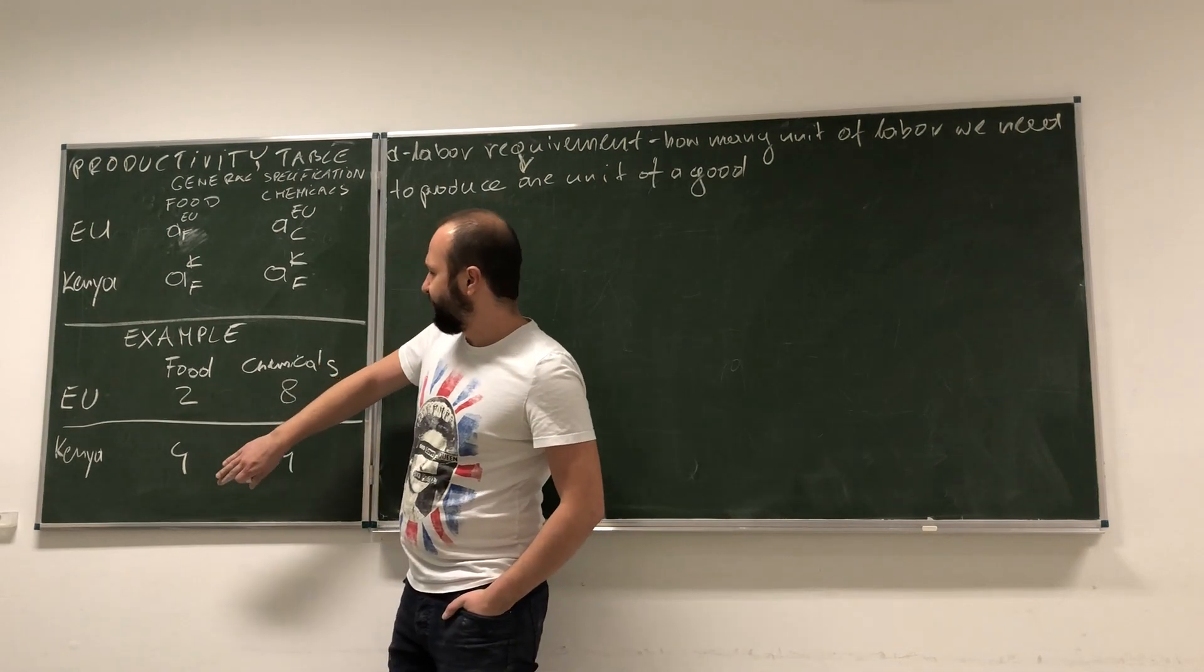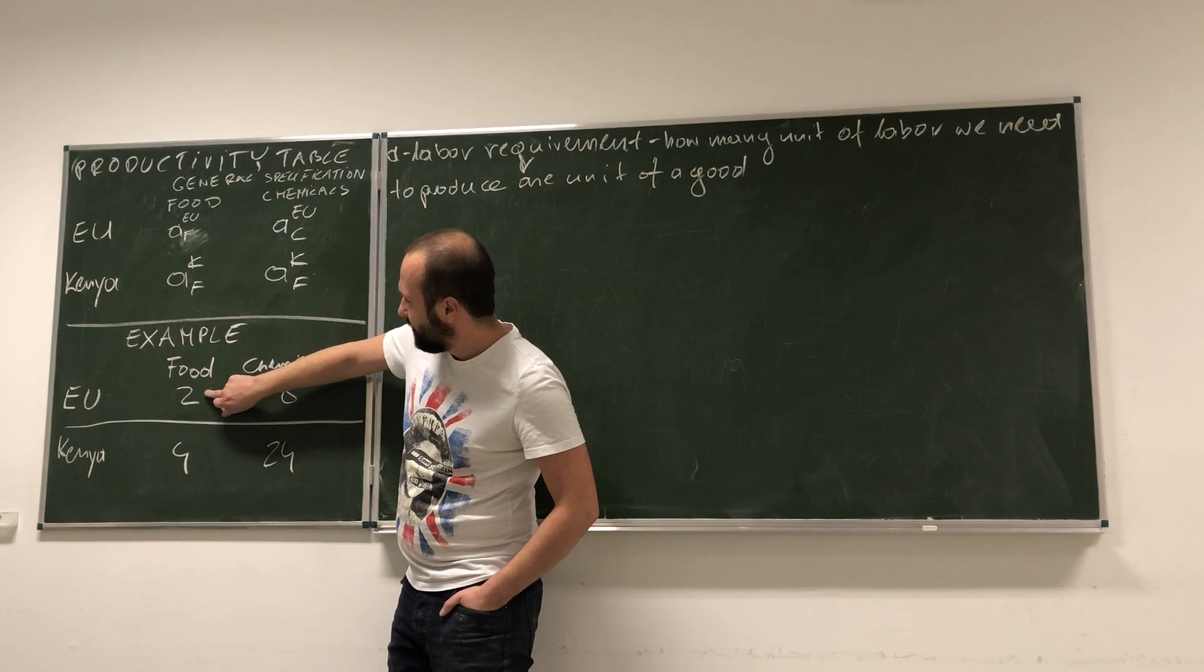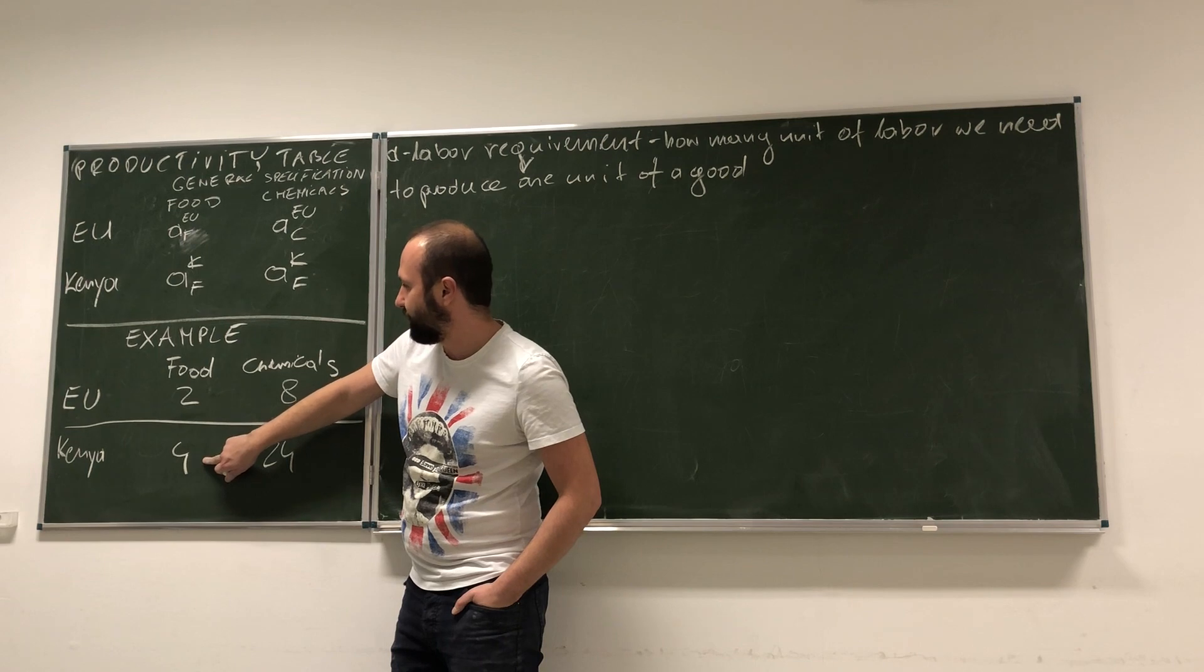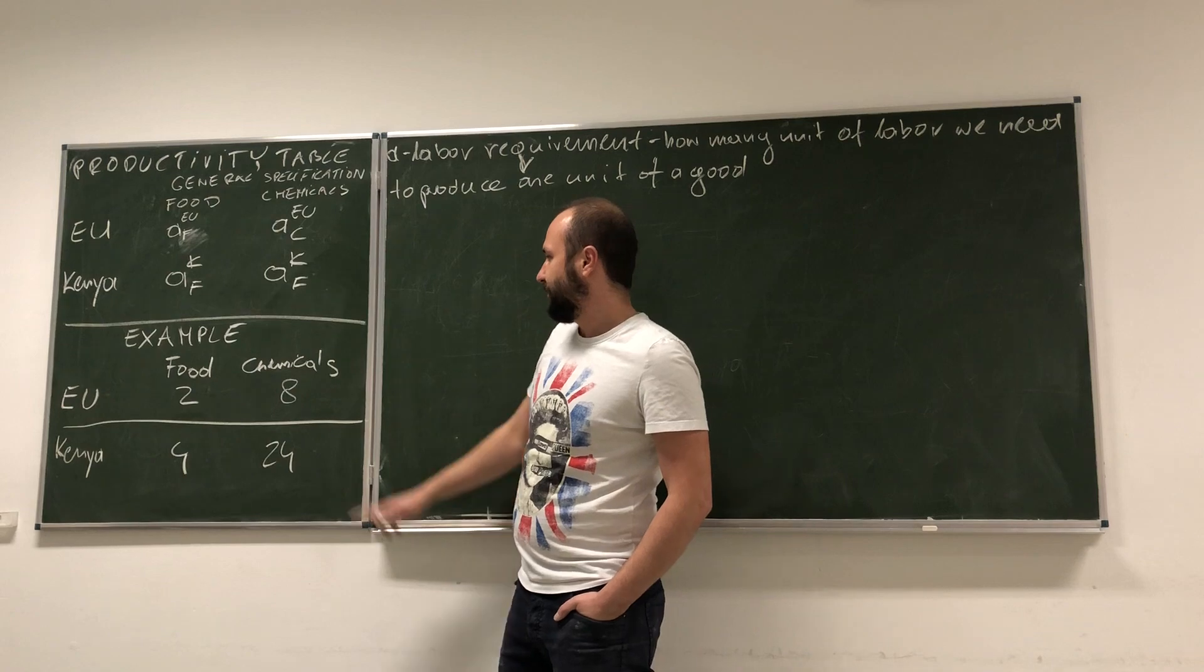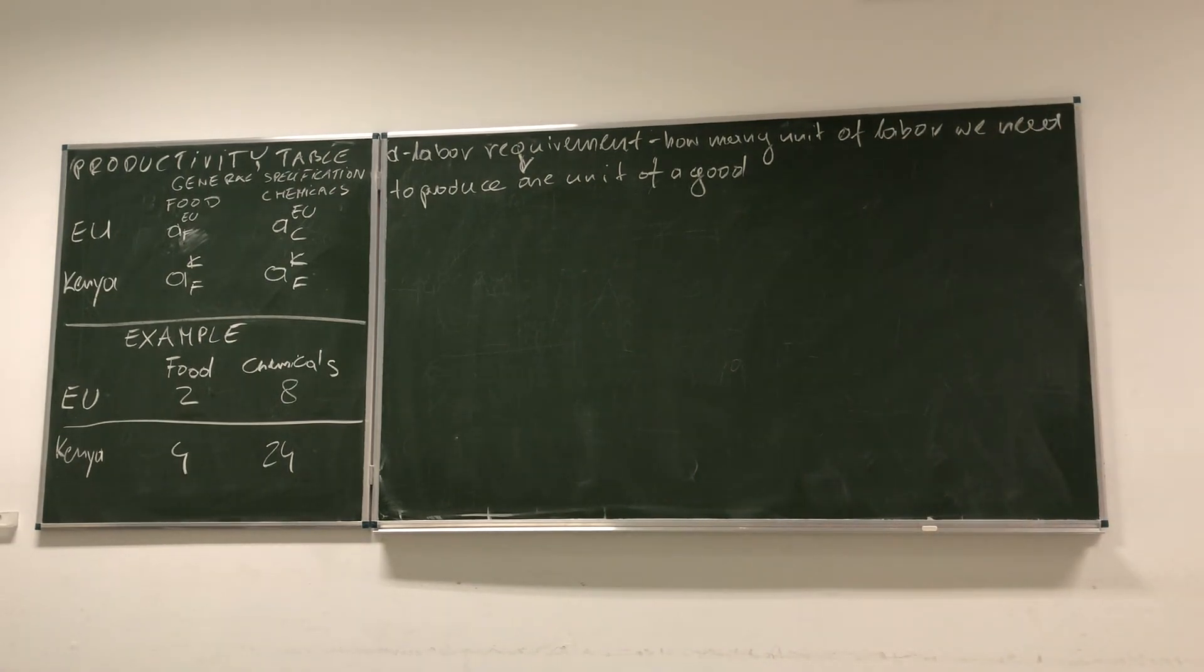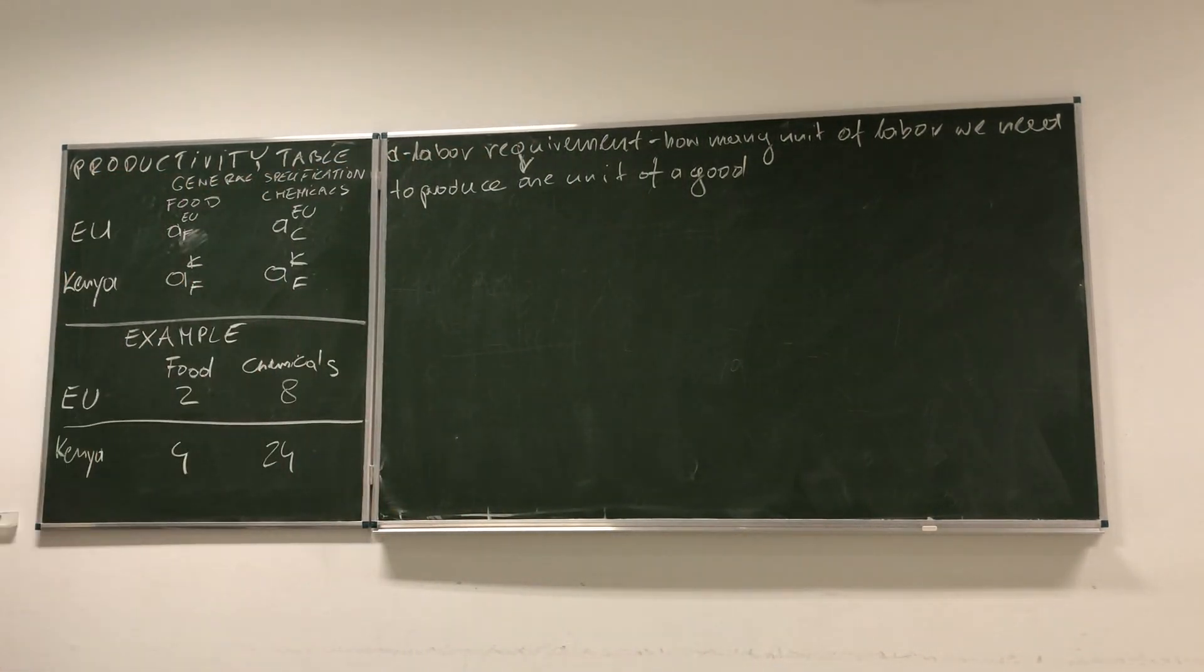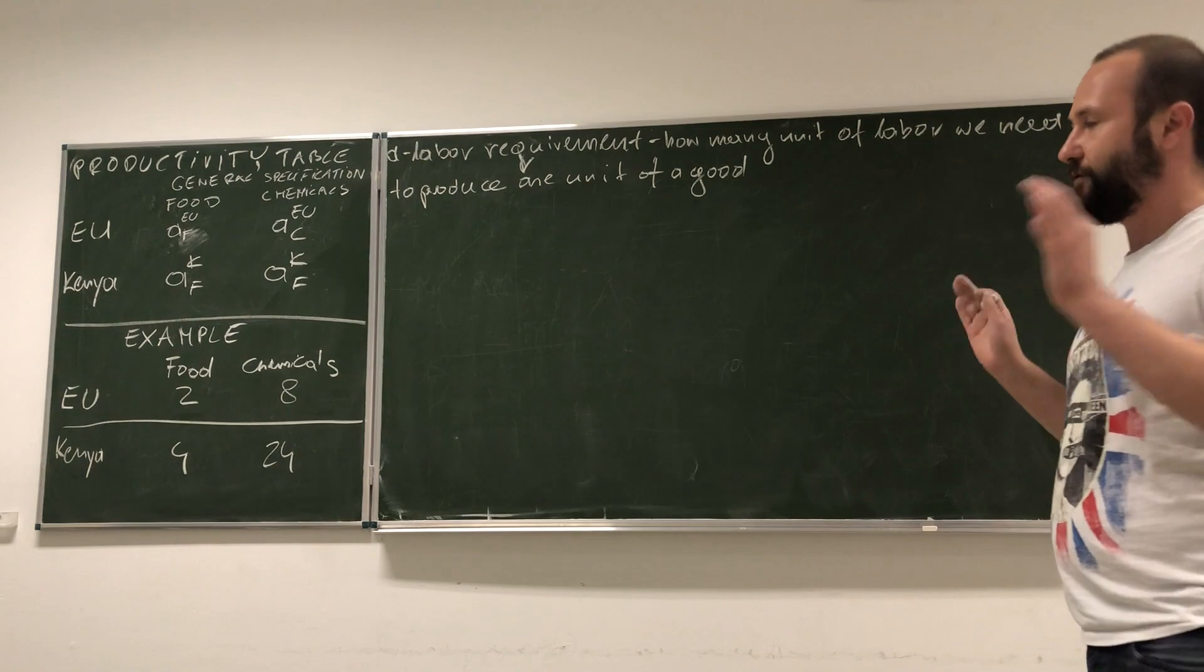Now, but there are some differences. Look, here we see that Kenya is twice less productive, it requires twice as much labor to produce one unit of food. But it's three times less productive in case of chemicals. Okay, if it would look like absolute cost advantage model by Adam Smith, those two countries should not trade. Why? Because the EU is better at producing both goods.